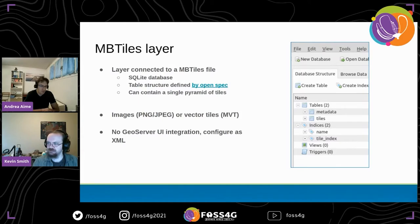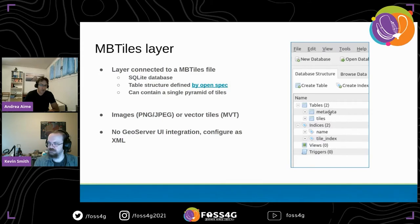At the moment, MBTiles can be configured only via XML — we don't have a GeoServer UI integration yet. The basic table structure is pretty simple: you have a tiles table containing all the tiles with X, Y, Z, and the tile blob value, plus a metadata table containing descriptive attributes including, if it's vector tiles, definitions of all the layers inside the vector tiles and their attributes. So, tile JSON metadata.